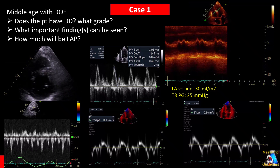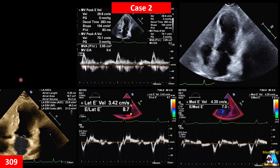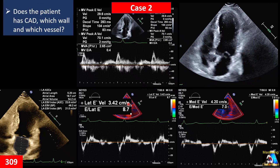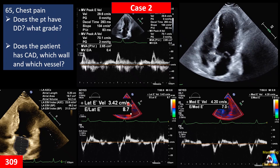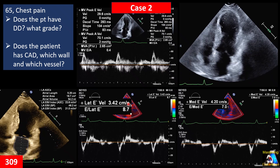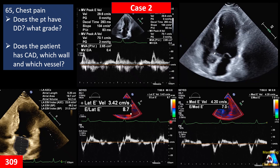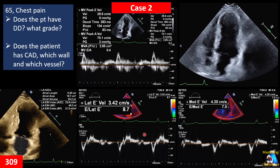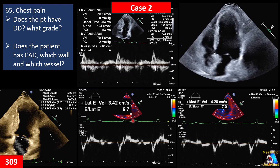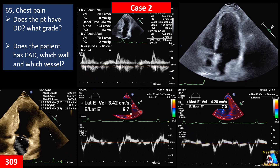Now let's go to the next case. Here we have a 65-year-old patient with chest pain. An echo was performed and we got these findings. Does the patient have diastolic dysfunction or not? If so, what type and what grade? All the numbers are visible. Second, does the patient have wall motion abnormality? If so, which walls and which vessel is involved?